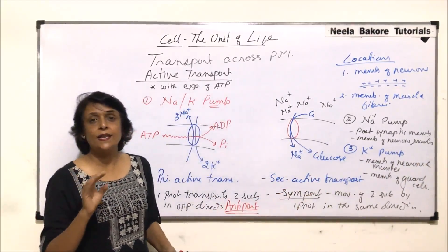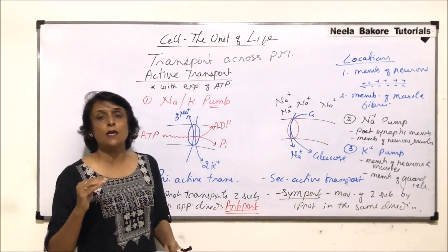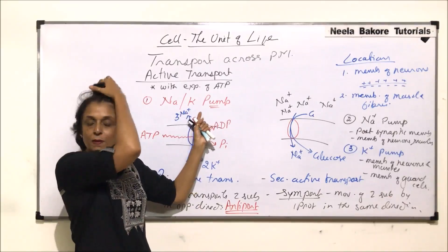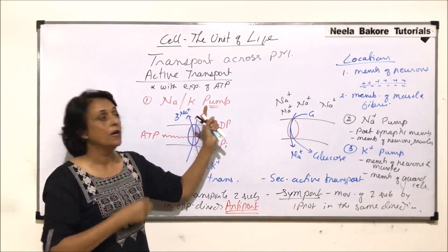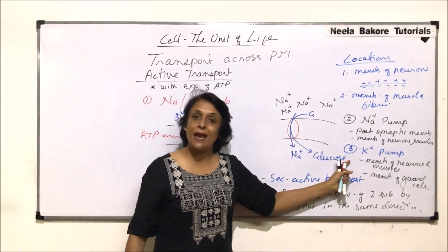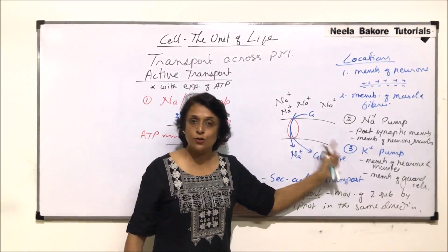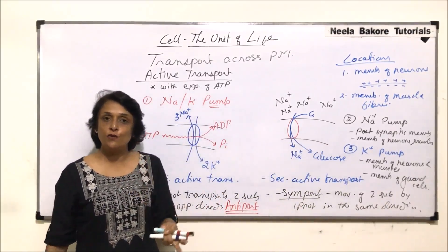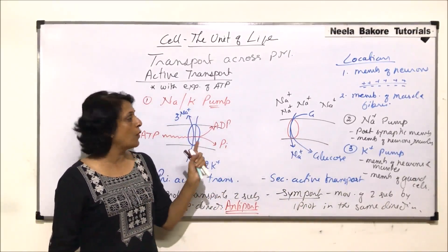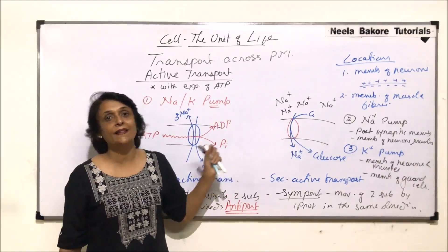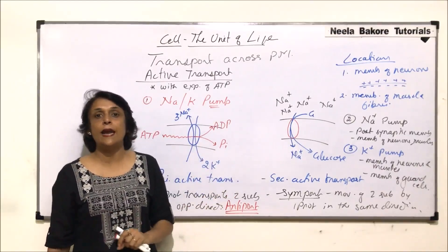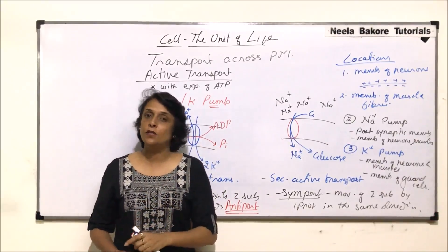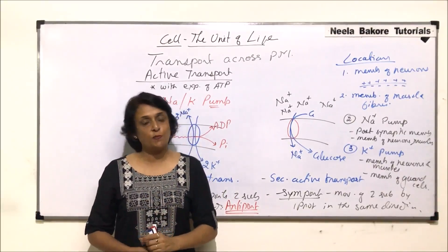Places like neurons and muscles have all three: sodium-potassium pumps, sodium pumps, and potassium pumps. There are two more active transport mechanisms — the calcium pump and endo-exocytosis — which we will take up in the next part.